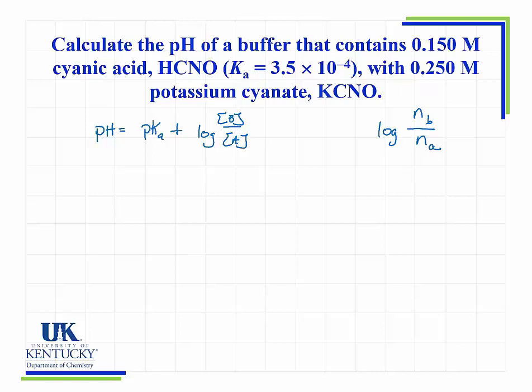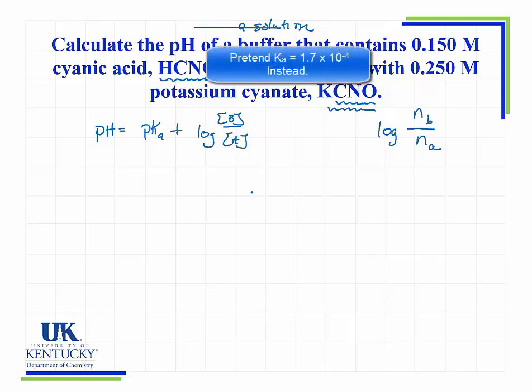Now, just so you know, we could have left out the word buffer and we'd have to recognize that it's a buffer. So it could have been worded this way. Calculate the pH of a solution that contains these things. Well, when I read through and see that it's a solution that contains these things, I would have to recognize that I have a weak acid and I have its conjugate base salt and that tells me, hey, I've got a buffer and that would prompt for me that I need to calculate the pH using the Henderson-Hasselbalch equation. So now I want you to stop and I want you to calculate the pH of this solution.